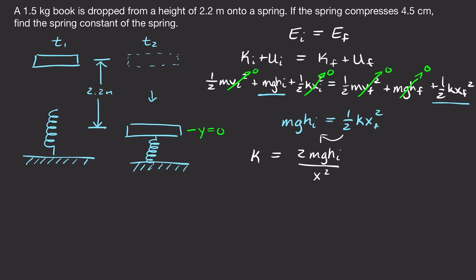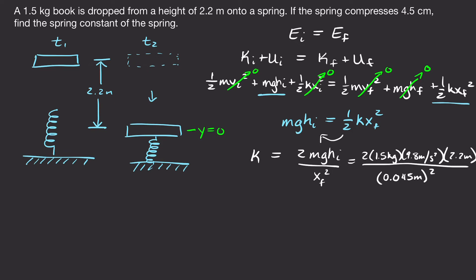Plugging in the values: two times the mass of the book, 1.5 kilograms, times 9.8 meters per second squared, times the initial height of 2.2 meters, all divided by the spring displacement squared — that's 0.045 meters squared, converting from centimeters. We get 31,940 newtons per meter, or 31.94 kilonewtons per meter.